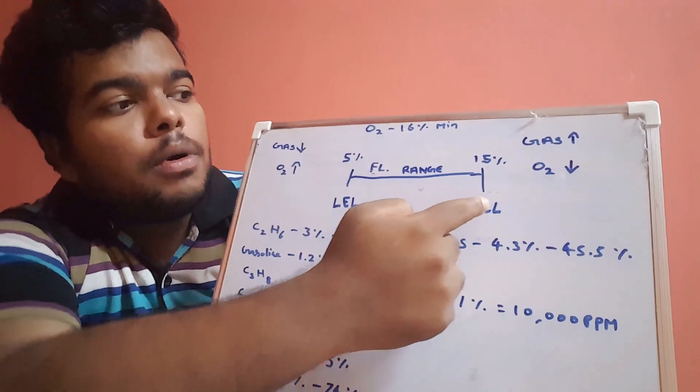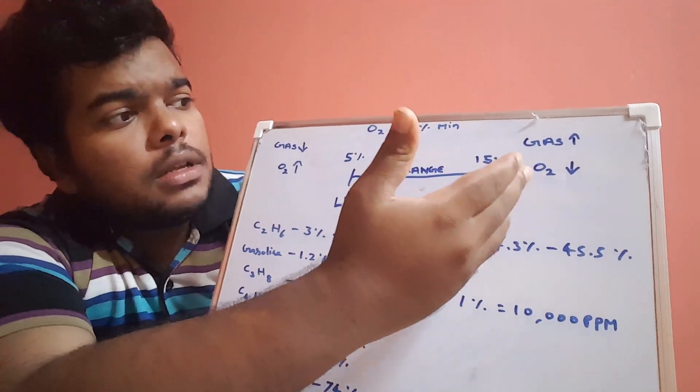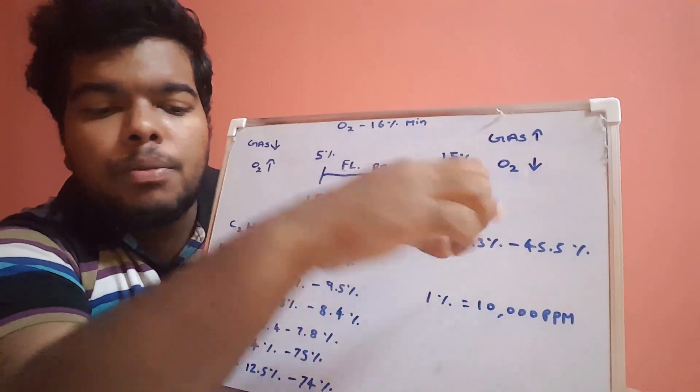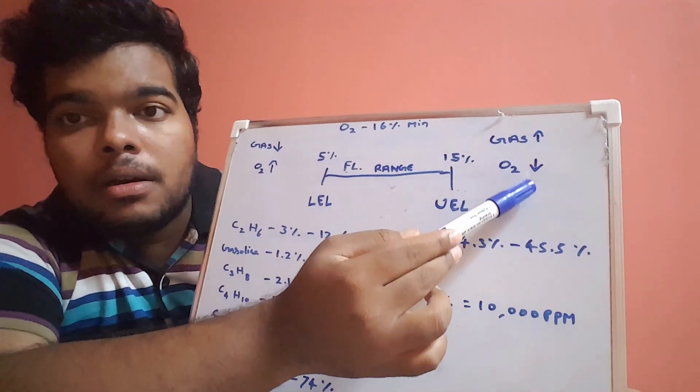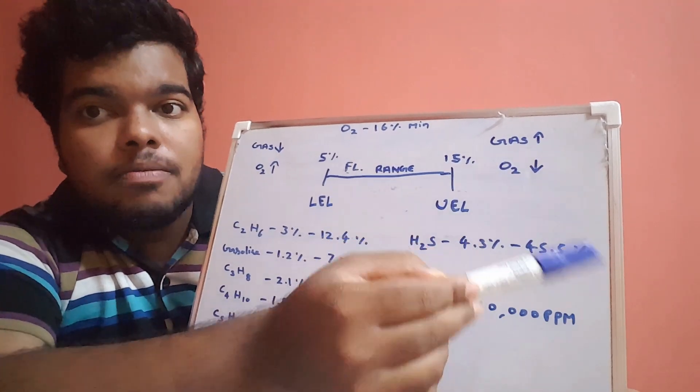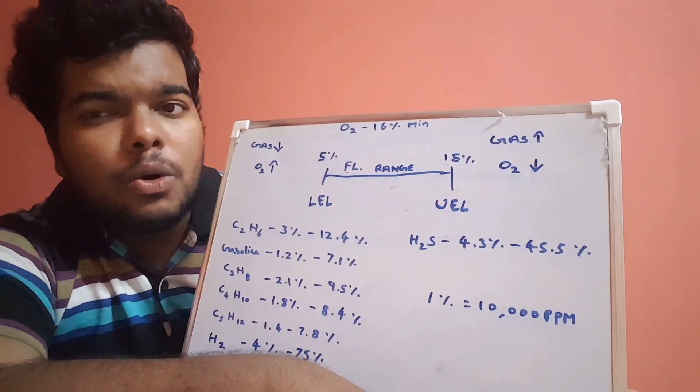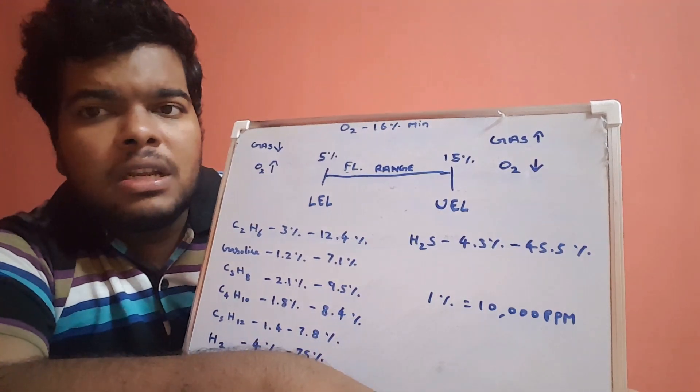Above UEL, what will happen? The gas value becomes very high, but the oxygen, which is one of the elements for making the fire, will be very low for burning. So the ignition will not sustain and it will go off.